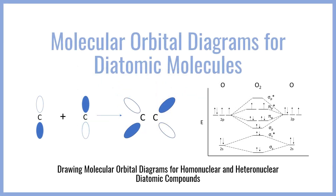Hey everyone, welcome to BCP Med. In this video I want to take a look at how to construct a molecular orbital diagram for diatomic molecules. We are going to start off from the basics of hydrogen sigma bonding and work our way up to homonuclear and then heteronuclear diatomic compounds.